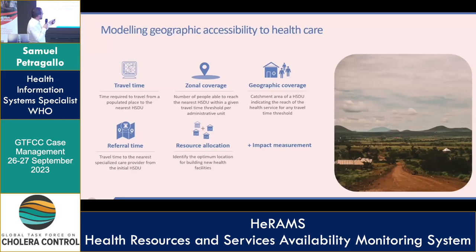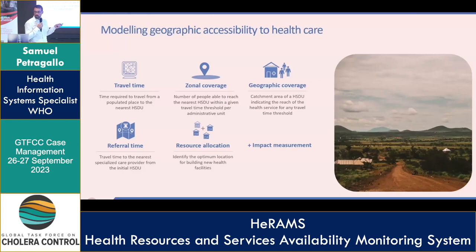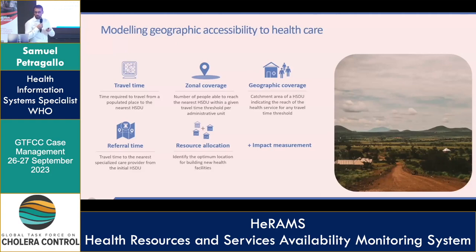The last element I wanted to mention here is that this kind of information is fundamental for resource allocation and essentially deciding where to deploy additional resources, and being in a position to measure the impact that those deployments will have in terms of coverage — which are the areas where people can't access ORPs.